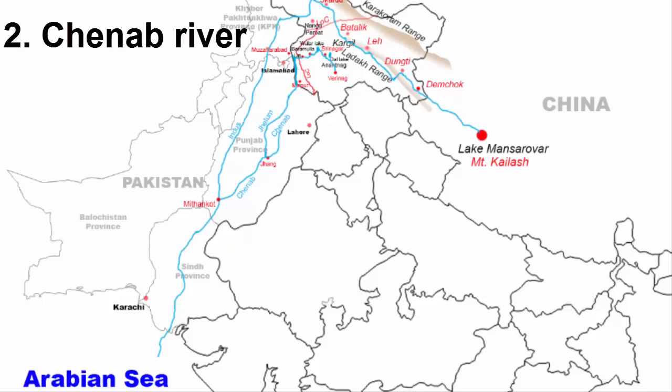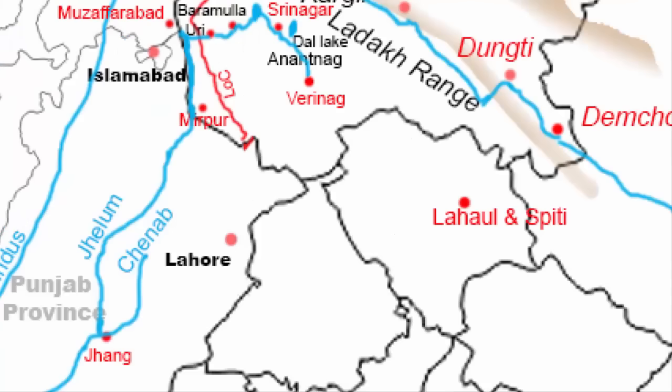The second river is the Chenab. The Chenab River originates from the Lahaul and Spiti valley of Himachal Pradesh. This region is covered with snow-bound mountains and is part of the middle Himalayas, so melting snow and glaciers give rise to its streams. The river Chenab is also called Chandra Bhaga, because it is formed after the merging of two streams — the Chandra and the Bhaga.